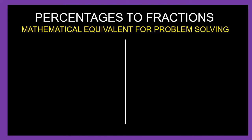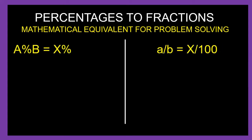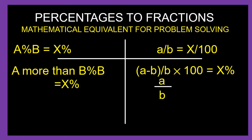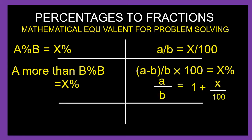Percentages are converted to their mathematically equivalent fractions for problem solving. There are three corresponding types: Type 1 — if A percentage B is X percent, then small a by small b equals X by 100. Type 2 — if A is more than B by X percent, that gives small a by small b equal to 1 plus X by 100.